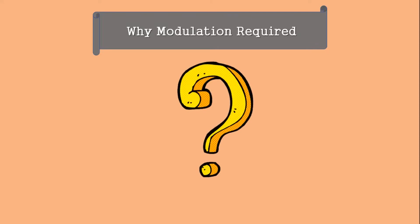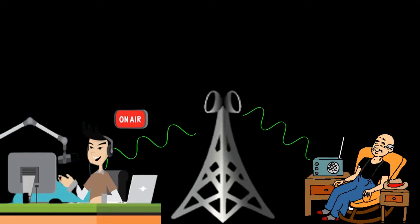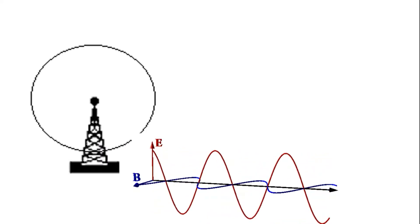So a question may be asked why we have to use modulation. Okay, so considering that now for the time being, let's just assume that there is no modulation and we are transmitting this voice signal through antenna without modulation. As we know, when this message signal transmits through antenna, it is transmitted in the form of electromagnetic wave.